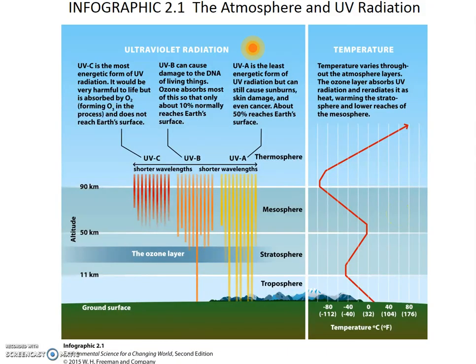You can see it depicted here in infographic 2.1. Now, technically it's not a layer, but simply a region of the stratosphere with a higher concentration of ozone gas. You can see from the diagram what those ozone molecules do for us. They effectively block ultraviolet B, or UVB, radiation from reaching the Earth, thus protecting us from this damaging radiation.